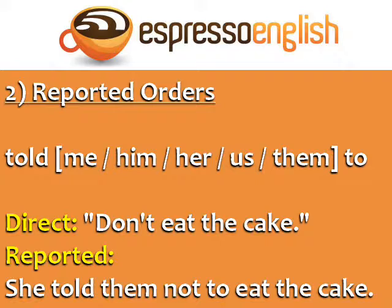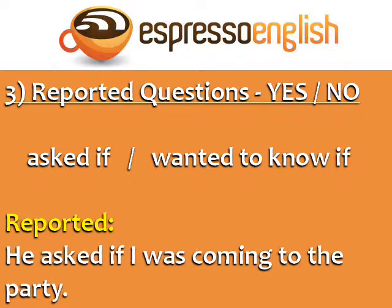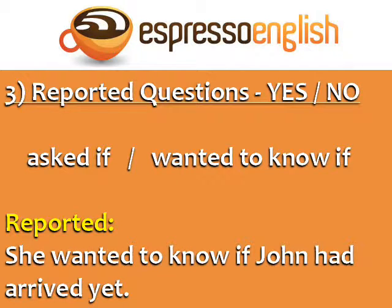Again, in reported orders, the main verb does not change its form from the direct to the reported statement. For reported yes-or-no questions, use 'asked if' or 'wanted to know if' in the reported question. Direct: 'Are you coming to the party?' Reported: 'He asked if I was coming to the party.' Direct: 'Has John arrived yet?' Reported: 'She wanted to know if John had arrived yet.'